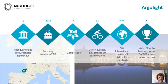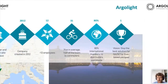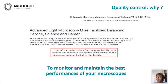ArgoLight is a French company located in the southwest of France in Bordeaux. It's a rather young company, created about eight years ago, and very international — most of their sales is abroad. Their goal is to remain the best solution for quality assessment and quality control for fluorescence-based microscopes. Enough of the introduction — let's start with the subject of interest, which is quality control.